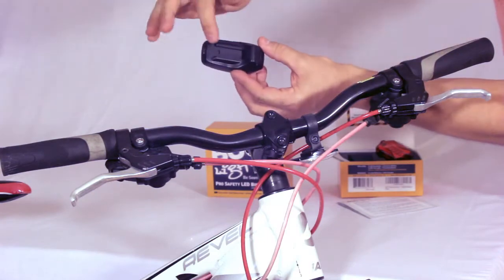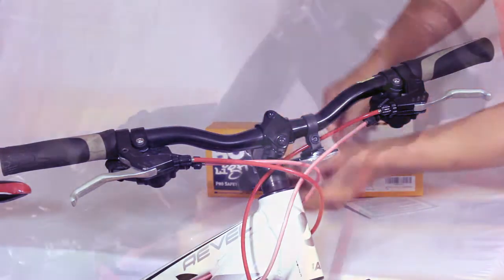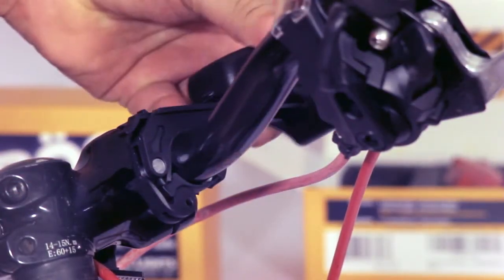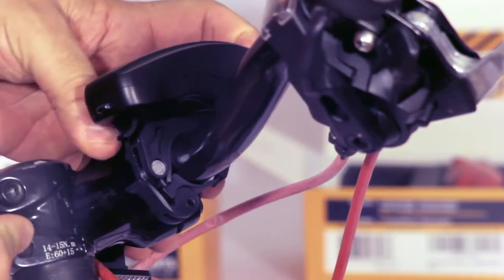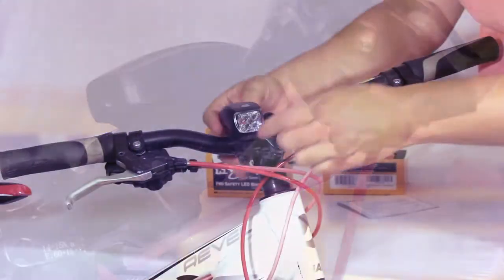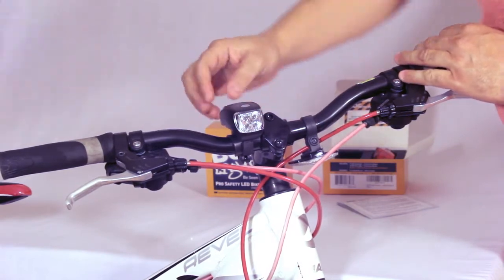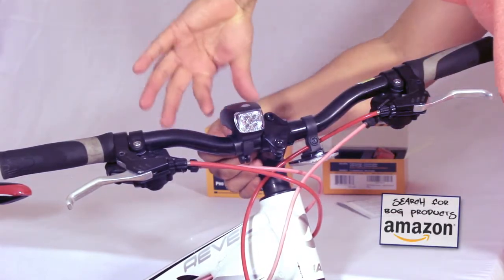There are rails in the back of the light, and you'll be able to just slide it over. Make sure that it locks over the trigger. The light will be secure, and if you want to release it, press the trigger in the back of the light and simply slide it off.